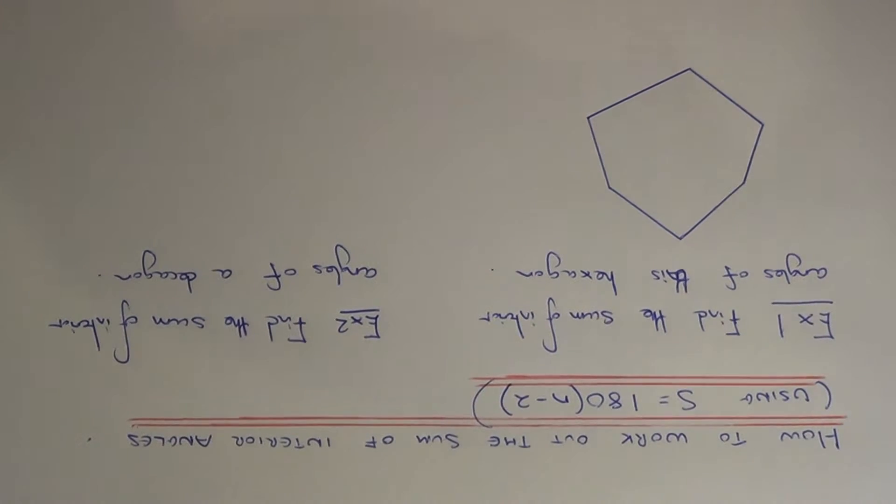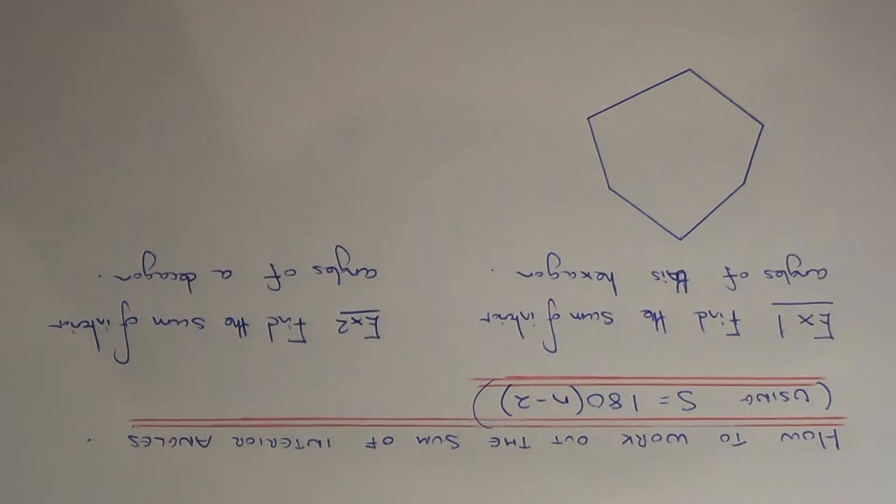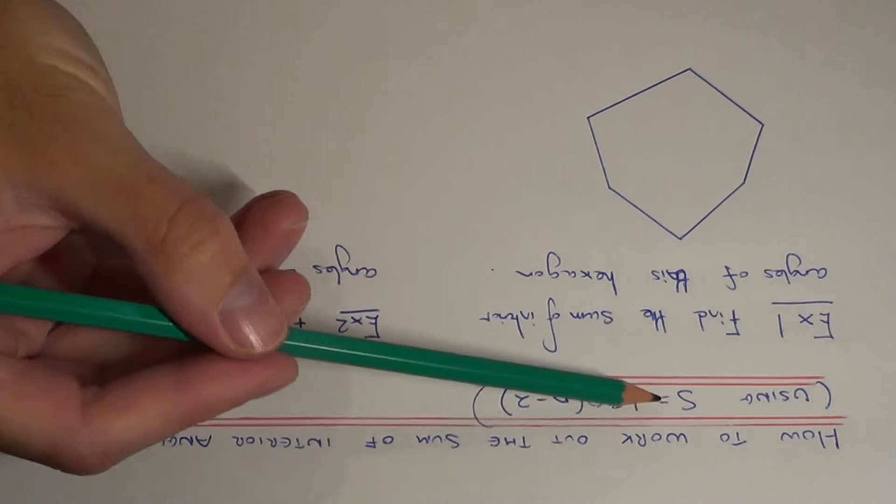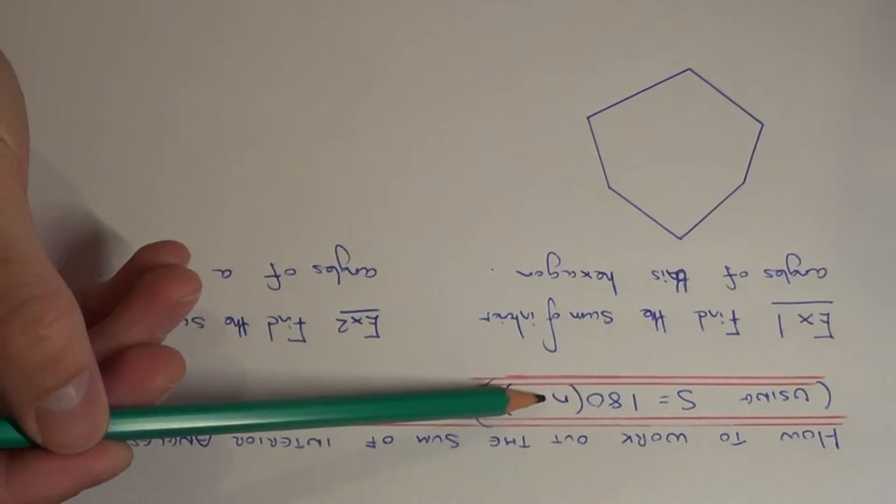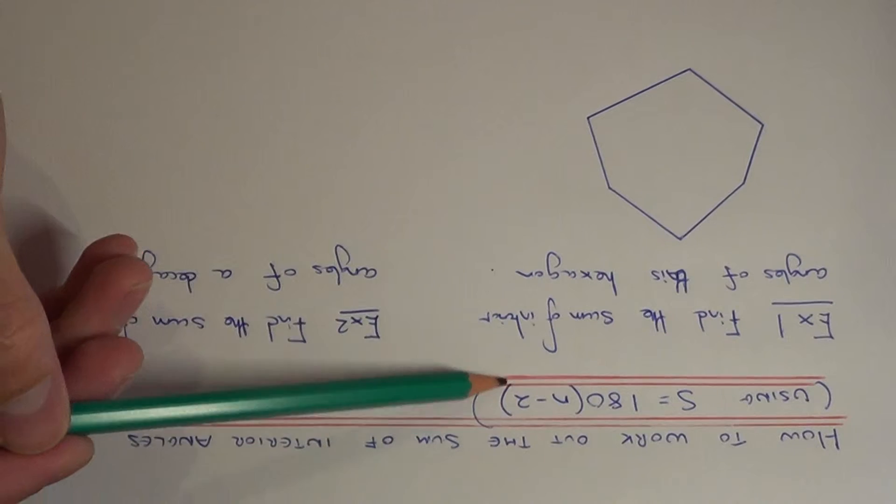Today I'm going to show you how to work out the sum of interior angles of an irregular polygon. We're going to do this using the formula S equals 180 bracket N minus 2, close your bracket.